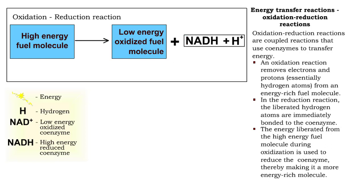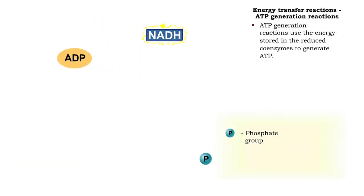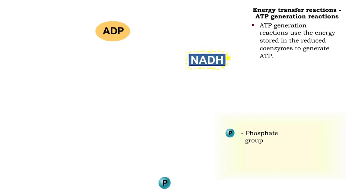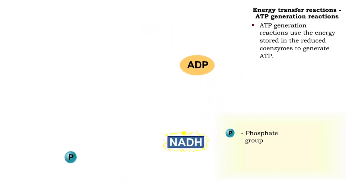As a result of the oxidation and reduction reactions working together, the reduced coenzymes now carry the energy that was once in the fuel molecule. The energy in reduced coenzymes is used to generate ATP molecules.